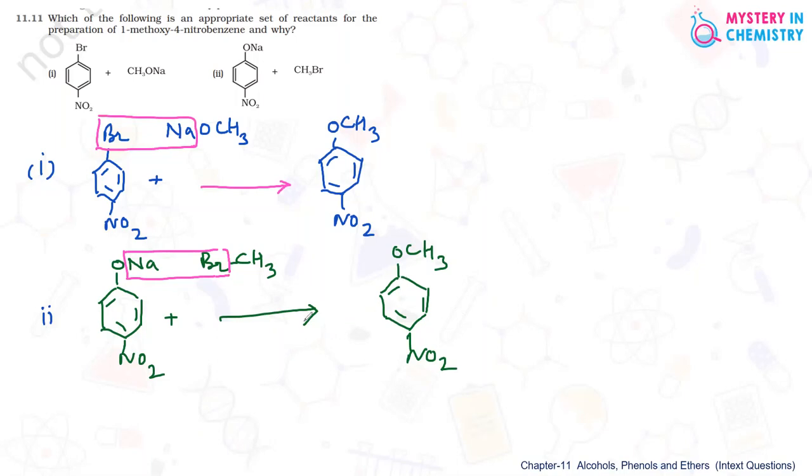Now, what is the difference? Actually, both are Williamson synthesis for the preparation of ethers. For this, we need one alkyl halide and one alkoxide ion, and the reaction is following SN2 mechanism. To avoid the steric hindrance in SN2 reaction, we must take primary alkyl halide.